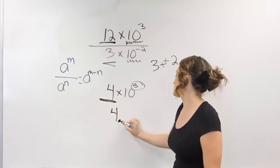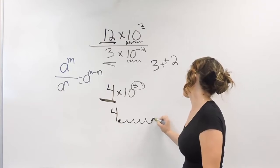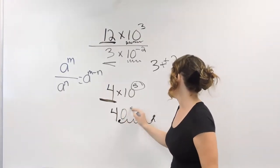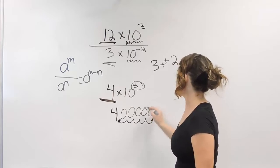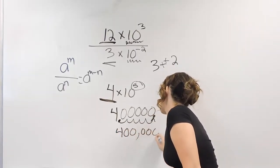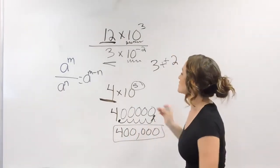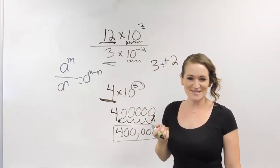So, if we move it five times to the right, we get one, two, three, four, five. That is where our new decimal point is. Fill in with zeros here. So, our final number in standard form is 400,000. That's how we divide two numbers in scientific notation.